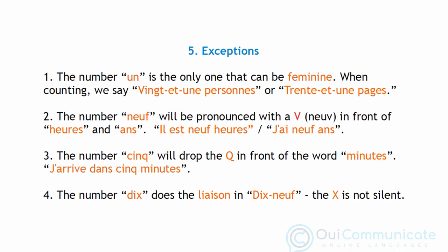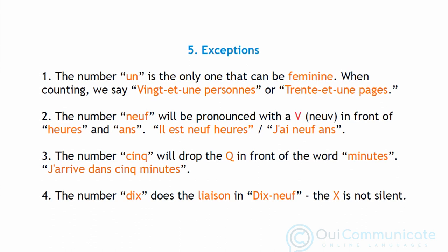The few exceptions to know of are the following. Number one: the number 'un' is the only one that can be feminine. When counting, we say 'vingt-et-une personnes' or 'trente-et-une pages'.